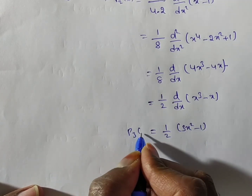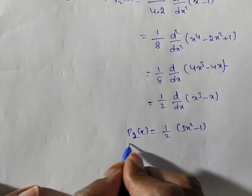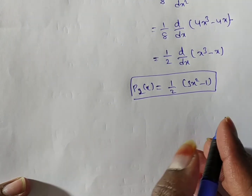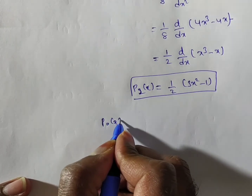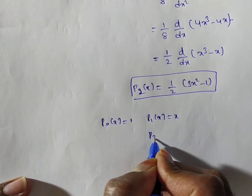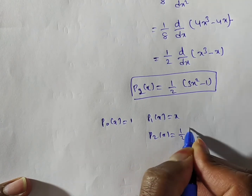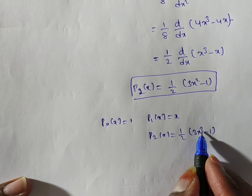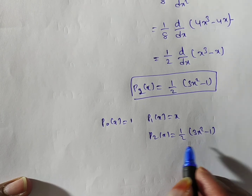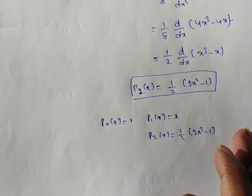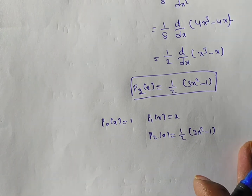So to summarize: P0(x) equals 1, P1(x) equals x, and P2(x) equals 1 by 2 times (3x² minus 1). You can observe the pattern: P0 has x to the power 0, P1 has x to the power 1, P2 has x squared as the highest term. In the next video we will discuss P3 and later P4. Thank you for watching this video.